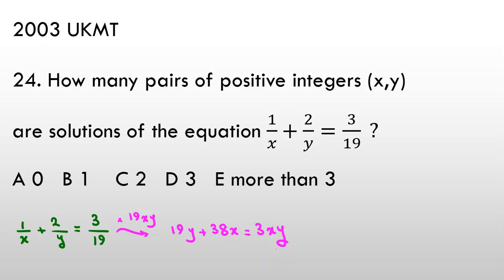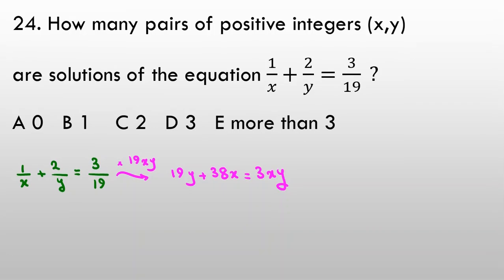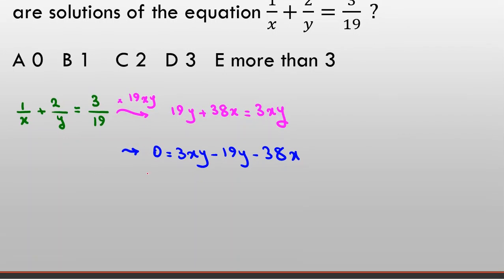Let's focus on this part. I want to factorize this, but the problem is that we have 3 here. So let's take all things to the right side: 3xy − 19y − 38x. Now I want to factorize this. So I write 0 = 3x times y.